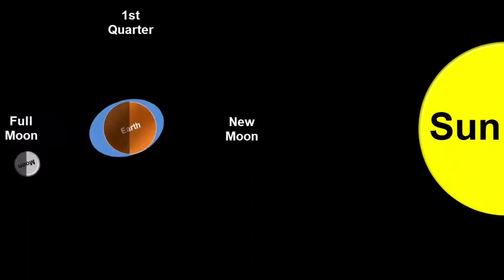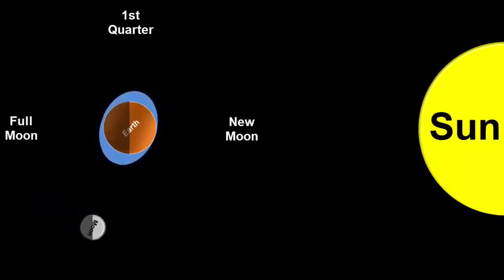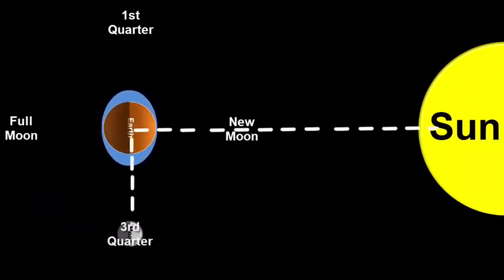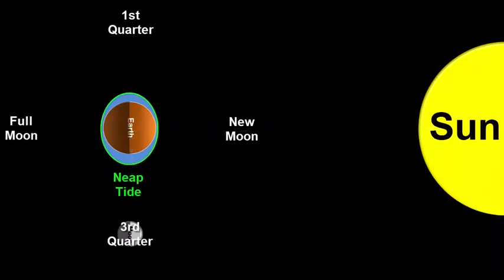Lastly, at the third quarter, the gravity of the sun and the moon are again at 90 degrees, so they pull in different directions. Therefore we get a neap tide.